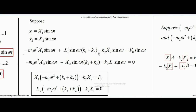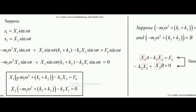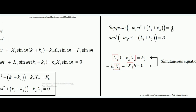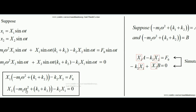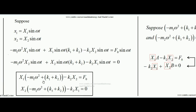Since sin(ωt) is common on both sides, it cancels out. Our equations become: X1·(-m1·ω² + k1+k2) - k2·X2 = F₀, and X2·(-m2·ω² + k3+k2) - k2·X1 = 0. Let A = (-m1·ω² + k1+k2) and B = (-m2·ω² + k3+k2), both constants. The equations simplify to: X1·A - k2·X2 = F₀ and X2·B - k2·X1 = 0.